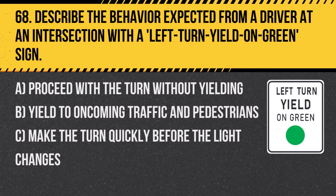Question 68: Describe the behavior expected from a driver at an intersection with a left turn yield on green sign. A. Proceed with the turn without yielding. B. Yield to oncoming traffic and pedestrians. C. Make the turn quickly before the light changes. Answer: B. Yield to oncoming traffic and pedestrians. This sign requires drivers to yield appropriately before completing a left turn.